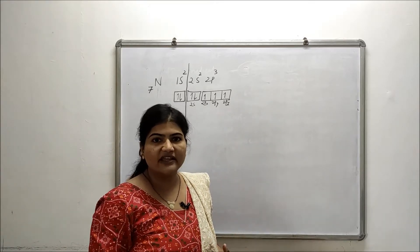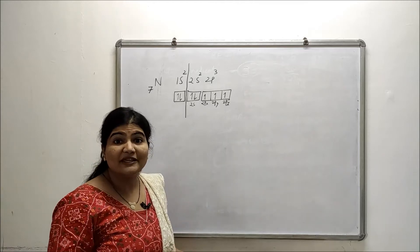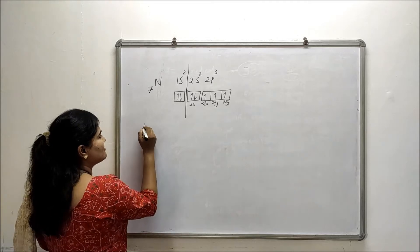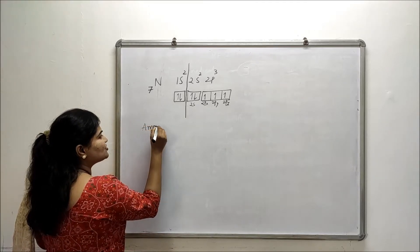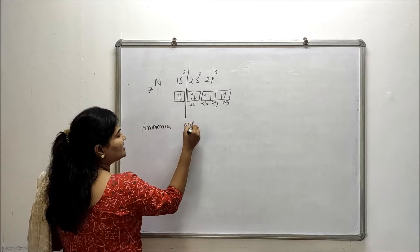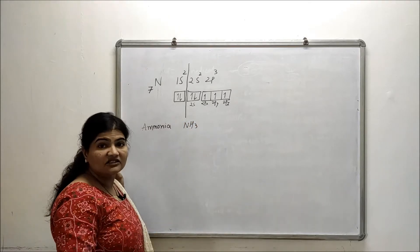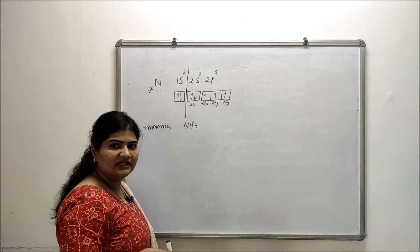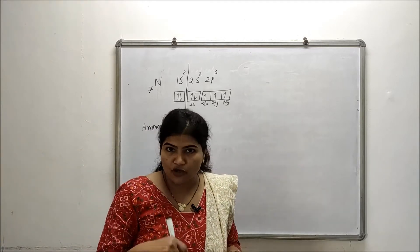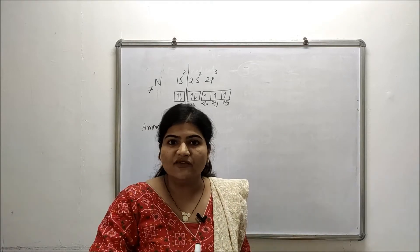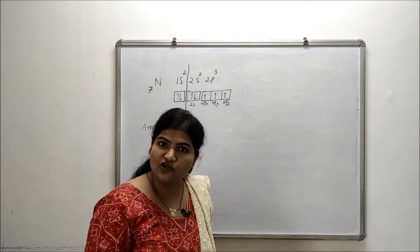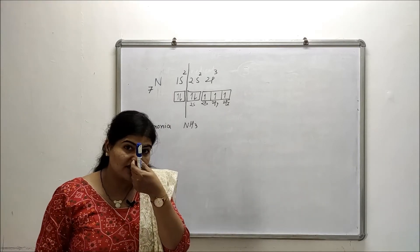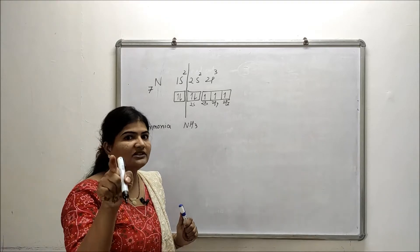Now let's discuss the compounds of nitrogen where we will find sp3, sp2 or sp hybridization. Let's take the example of ammonia, NH3. Here nitrogen is bonded to 3 hydrogen atoms. For carbon, if it is bonding to 4 atoms we go for sp3, but for nitrogen we go for sp3 when it is bonding to 3 other atoms.